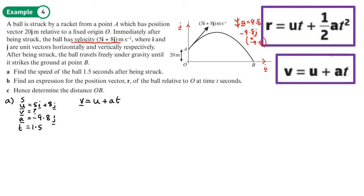I'm now going to work in columns. v is what we want to find, u is five and eight, plus at. So t is 1.5 times a which is negative 9.8. We multiply that out: 5 plus 1.5 times 0 is 5, and the bottom is 8 plus 1.5 times negative 9.8, which gives negative 6.7.